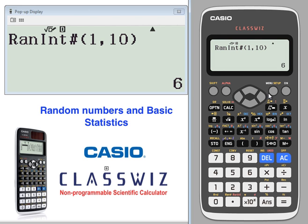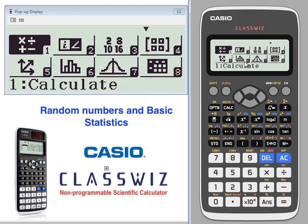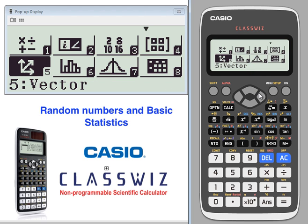The second place we want to look is some basic statistics. Go menu. Statistics is number 6. You can toggle down and press the number 6.